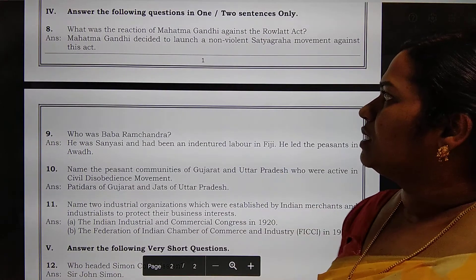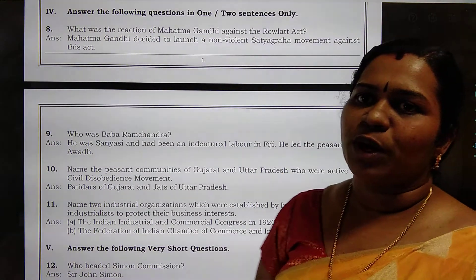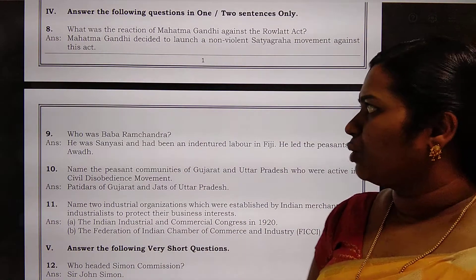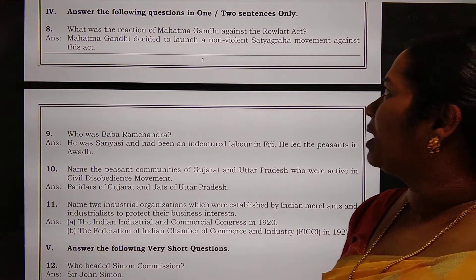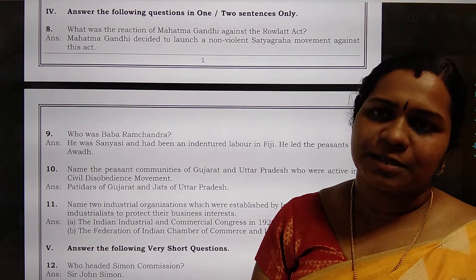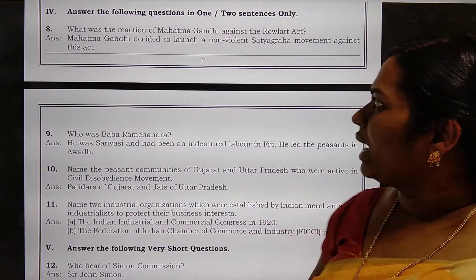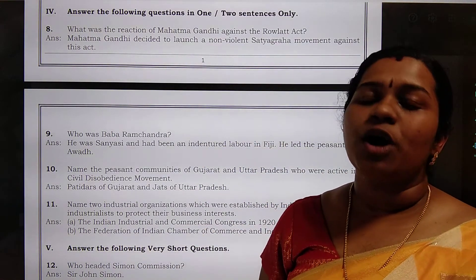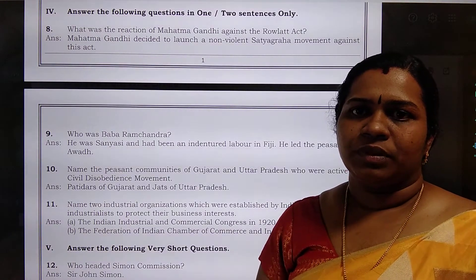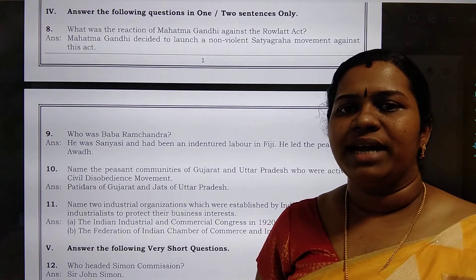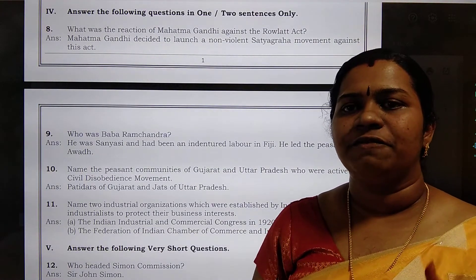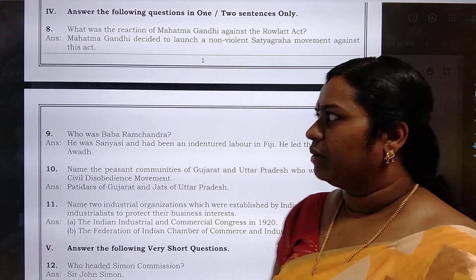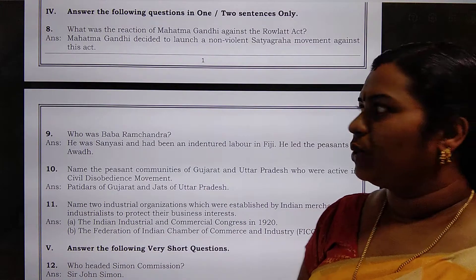Answer the following questions in one or two sentences. The eighth question: what was the reaction of Mahatma Gandhi against the Rowlatt Act? Against the Rowlatt Act, Gandhiji decided to start a non-violent satyagraha. Associated with that, he organized the first hartal on 6th April 1919. We can write that sentence as the answer.